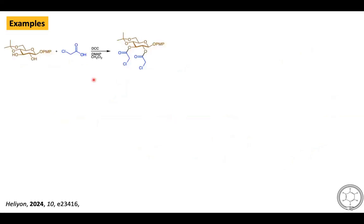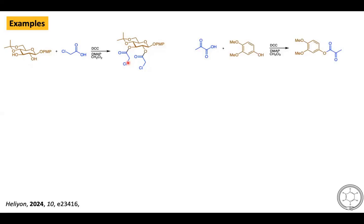Next we will see some examples of Steglitz esterification. In the first example, a compound derived from a carbohydrate containing two alcohol groups reacts with chloroacetic acid using Steglitz esterification conditions to generate the corresponding ester compounds.